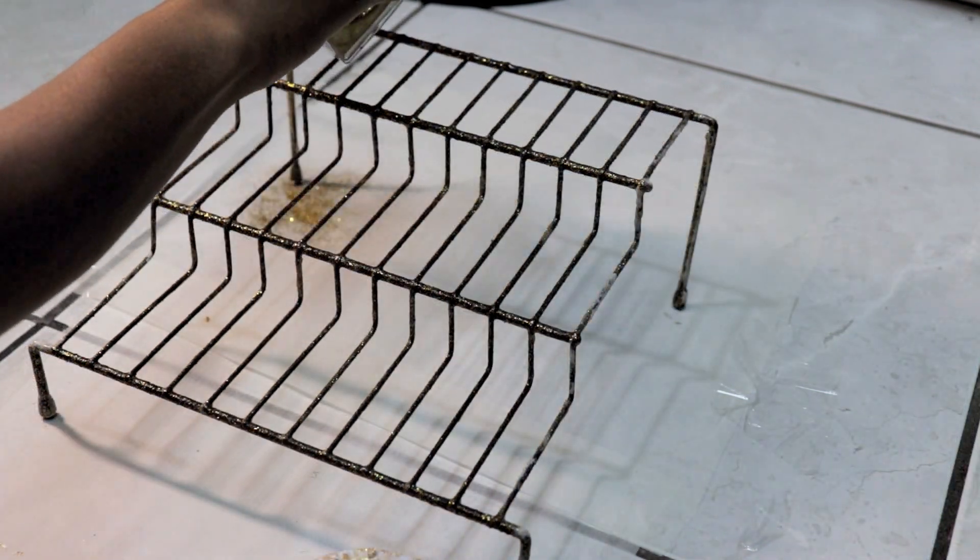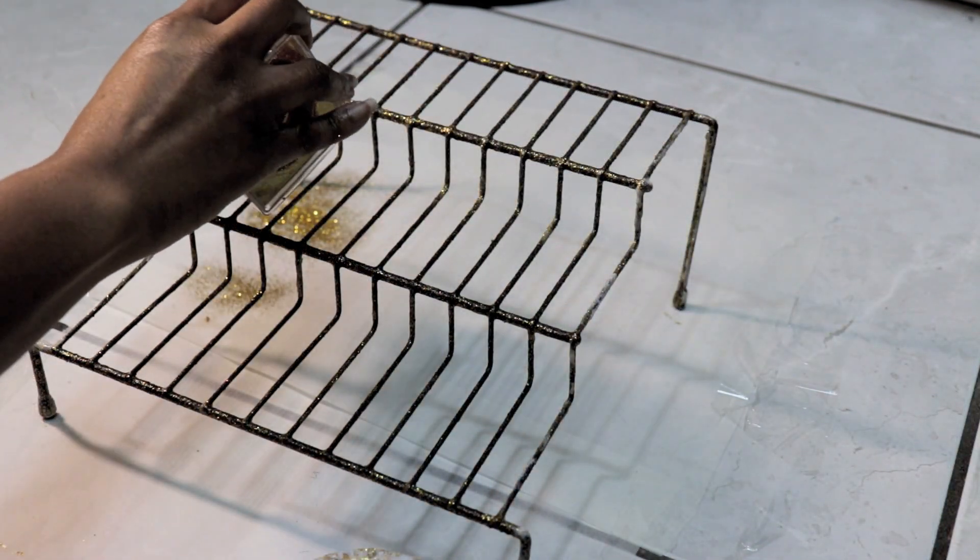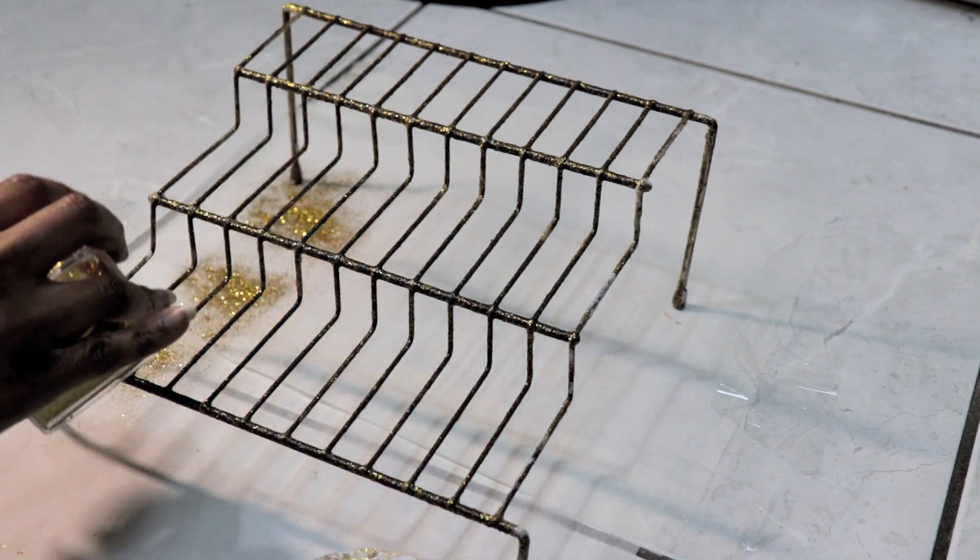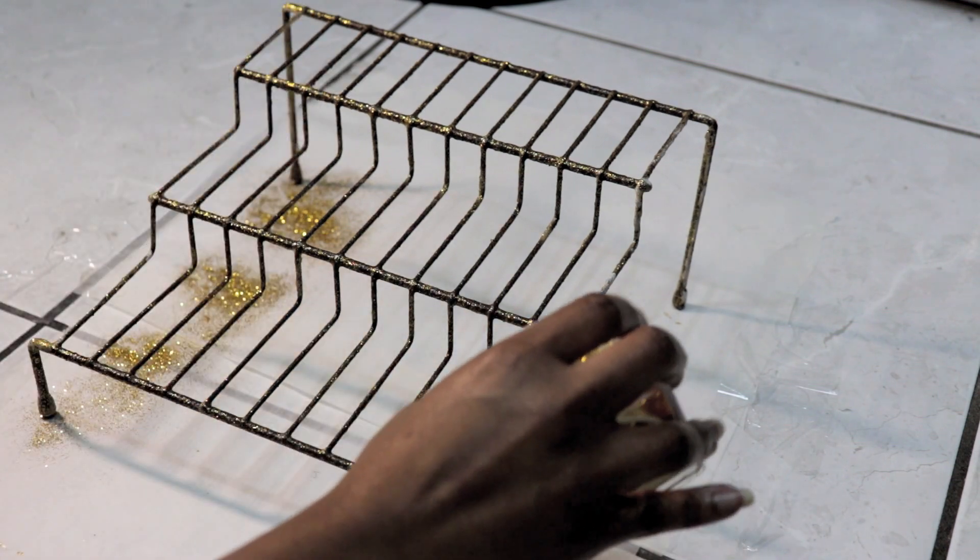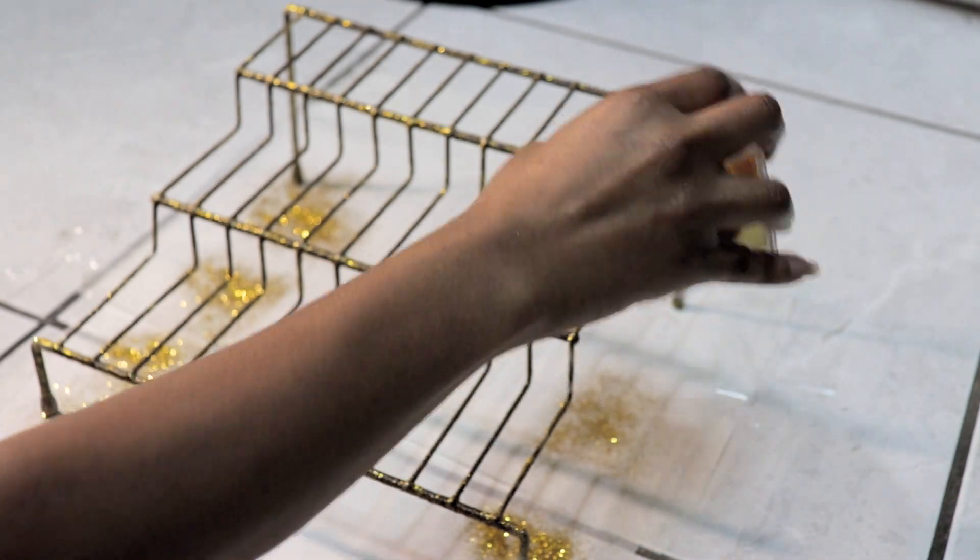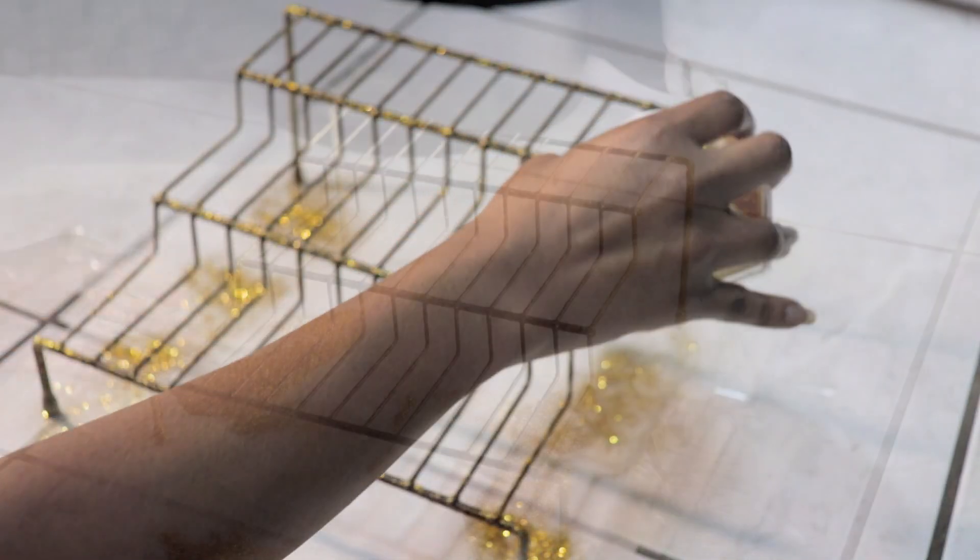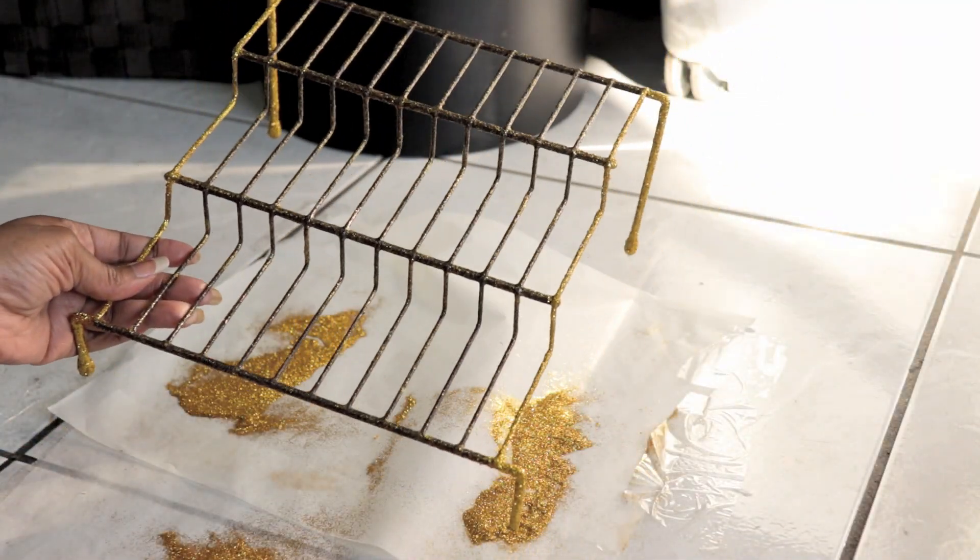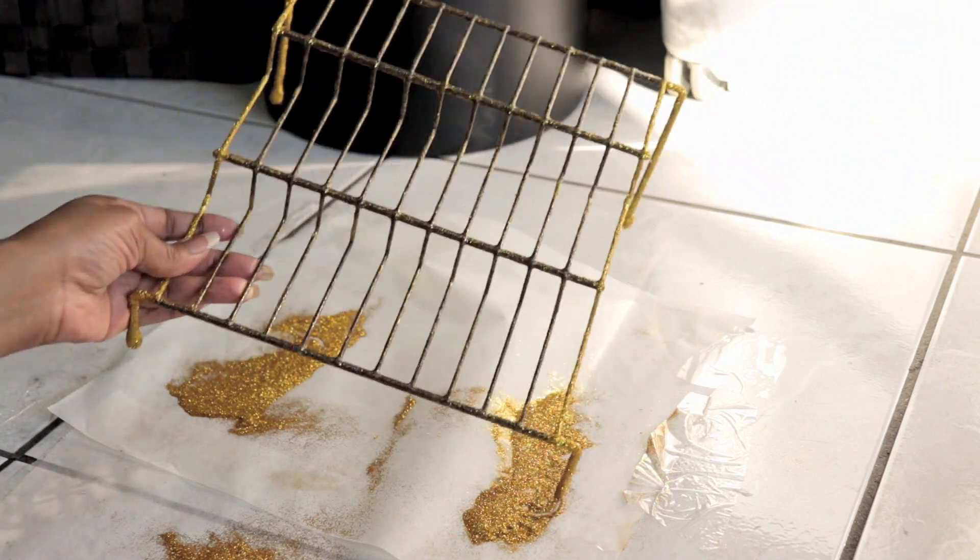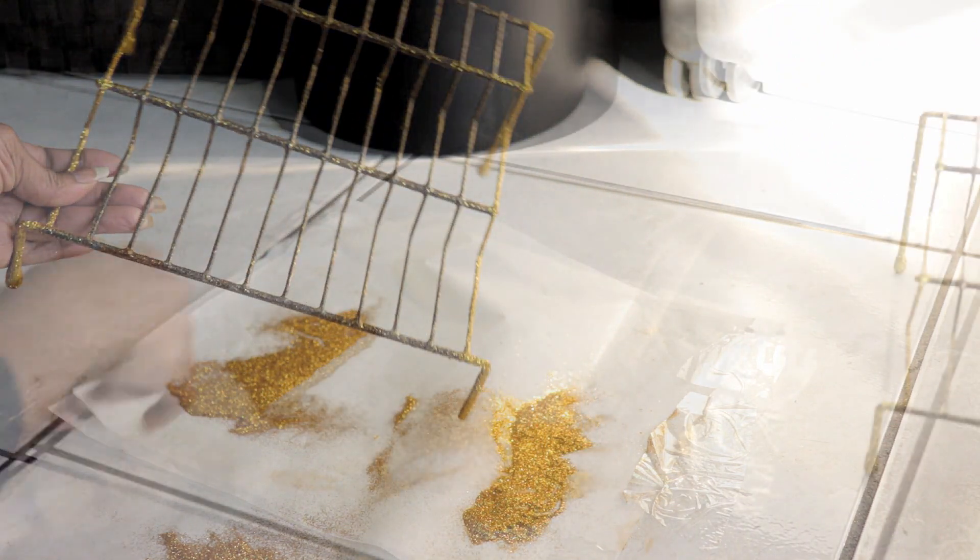Then I grabbed the glitter shaker and applied the glitter on the outer corners of the shelf. This is how it looks when fully dry, nice and blinged out.